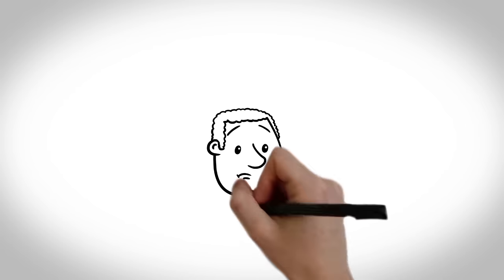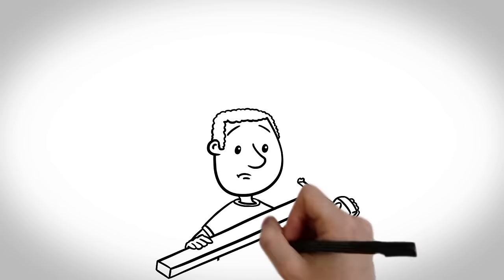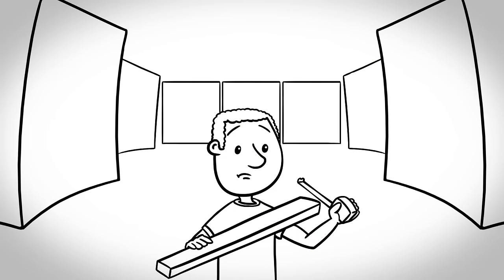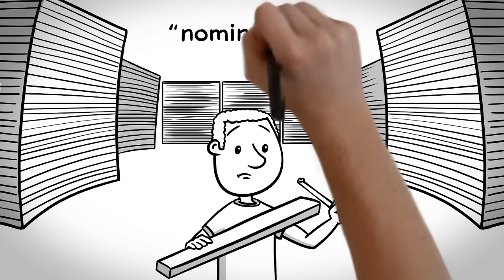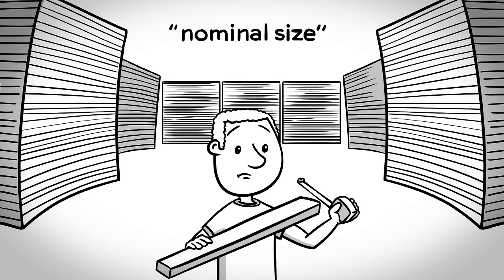If you go to a home center and buy some lumber, say a 2x4, and you measure it, you'll find it does not measure 2 inches by 4 inches. This is known as a nominal size, or in-name only. This practice is done in many industries, including most of the crawl space repair industry.